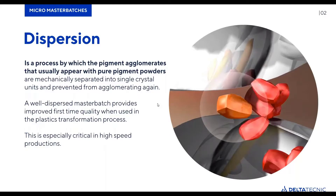Dispersion is 100% the responsibility of the masterbatch manufacturer. We define dispersion as the process by which pigment agglomerates that usually appear with pure pigment powders are mechanically separated into single crystal units and prevented from agglomerating again.